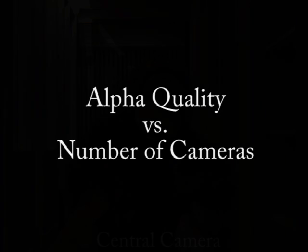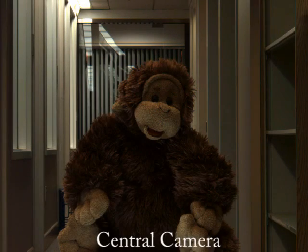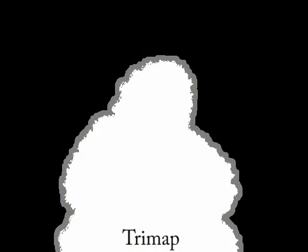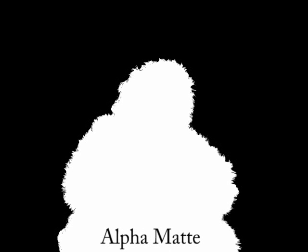The number of cameras needed to get good results is a factor of scene content and camera spacing. We've gotten good results with as few as eight cameras. Here we show results for a stuffed gorilla filmed in a hallway. As we drop the number of cameras used, the alpha-mat quality is retained.